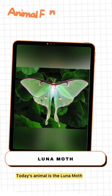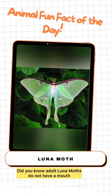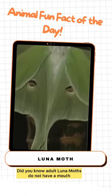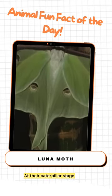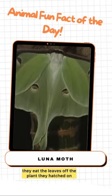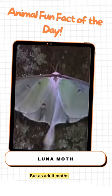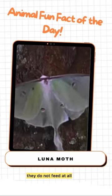Today's animal is the luna moth. Did you know adult luna moths do not have a mouth? At their caterpillar stage, they eat the leaves off the plant they hatched on. But as adult moths, they do not feed at all.